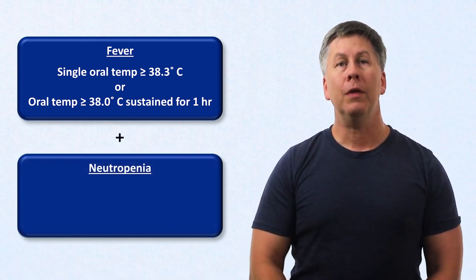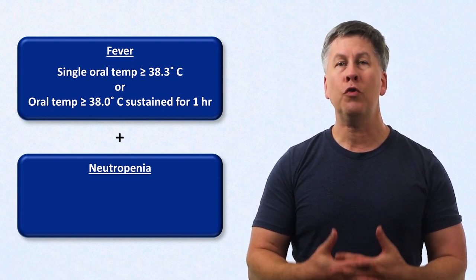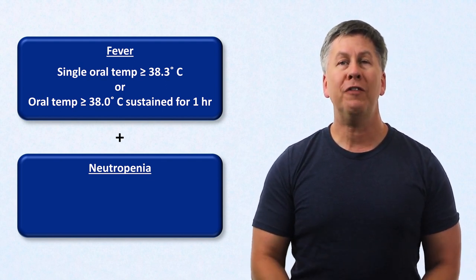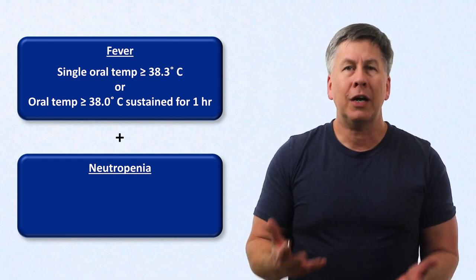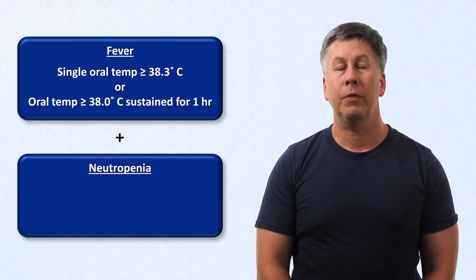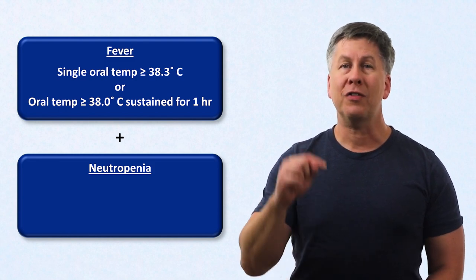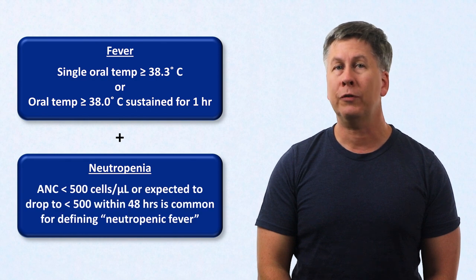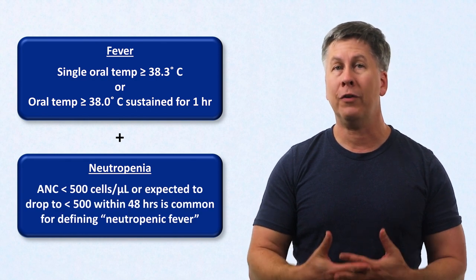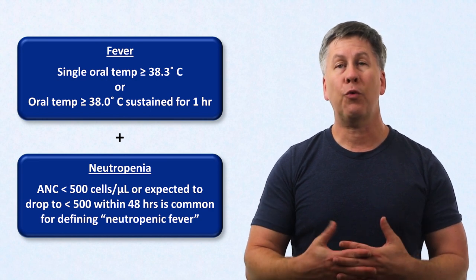Regarding the neutropenia, there exists surprisingly little consensus on the normal range for neutrophils, though 1,500 cells per microliter is a commonly cited lower bound. The degree of neutropenia needed for this condition is most commonly defined as an absolute neutrophil count below 500, or one that is expected to drop to below 500 within the next 48 hours.